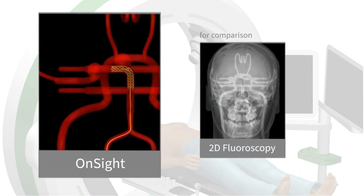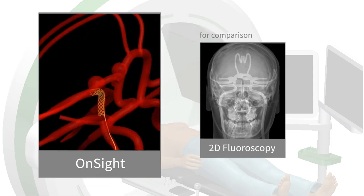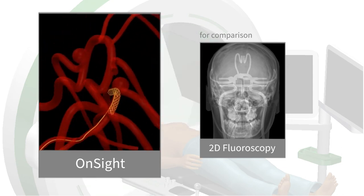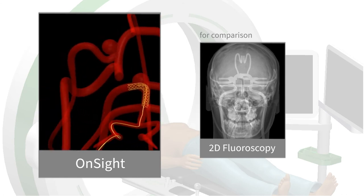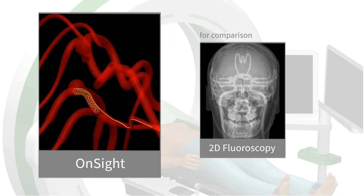This is a clear winner over 2D fluoroscopy, where often it is not clear whether the guide wire is between the stent and the vessel wall, or inside the stent.